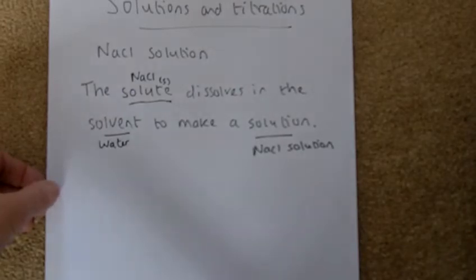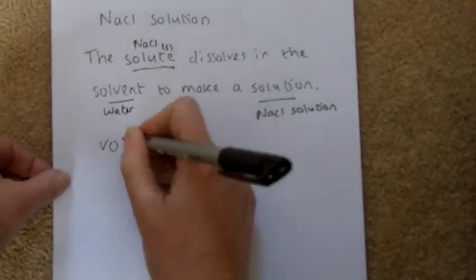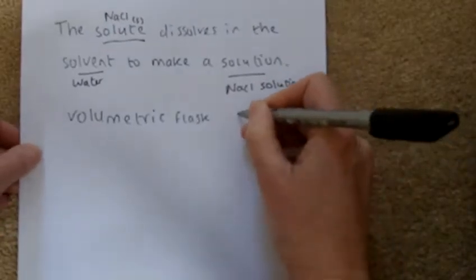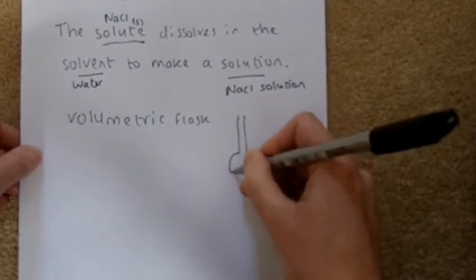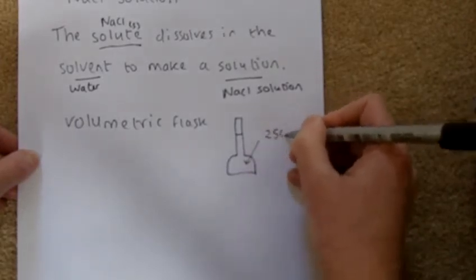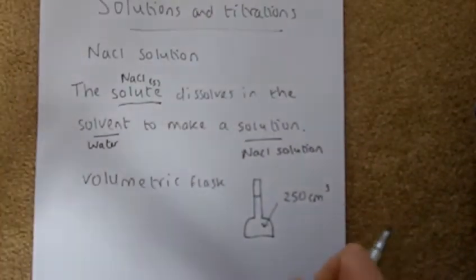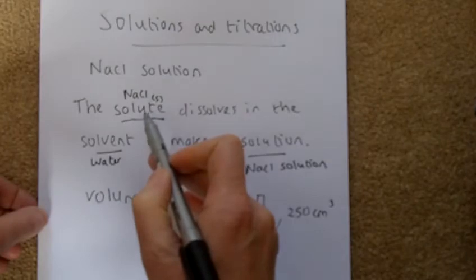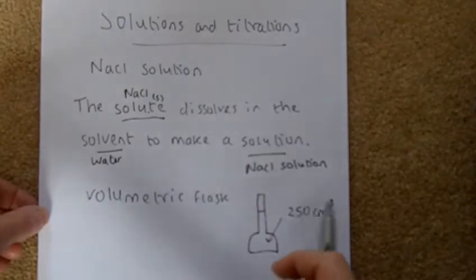In chemistry, we make a solution using a volumetric flask. It has a long neck and a flat bottom. The one we use is typically a 250 cm³ volumetric flask. So if I said to you make a sodium hydroxide solution, you dissolve the solute — sodium hydroxide — in water, which is the solvent, to make a solution.